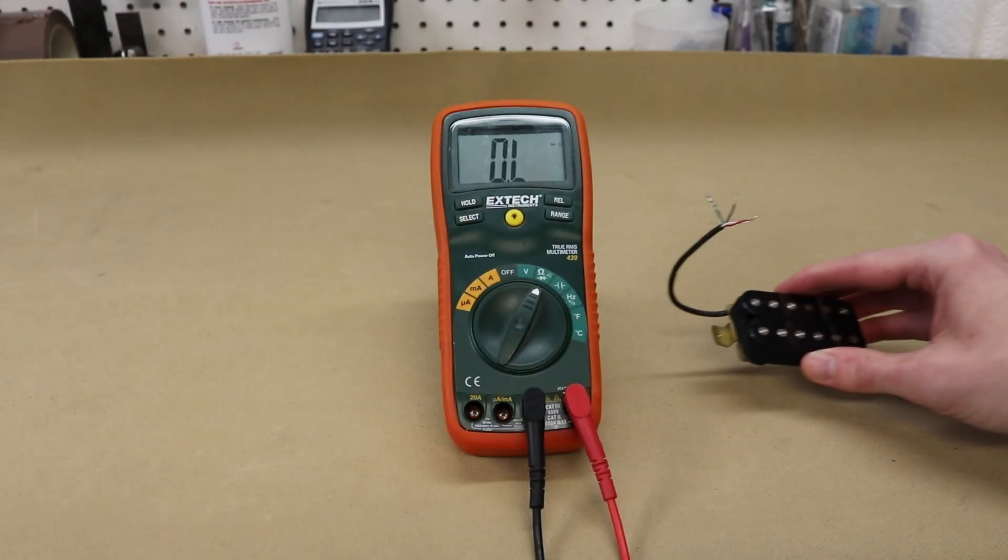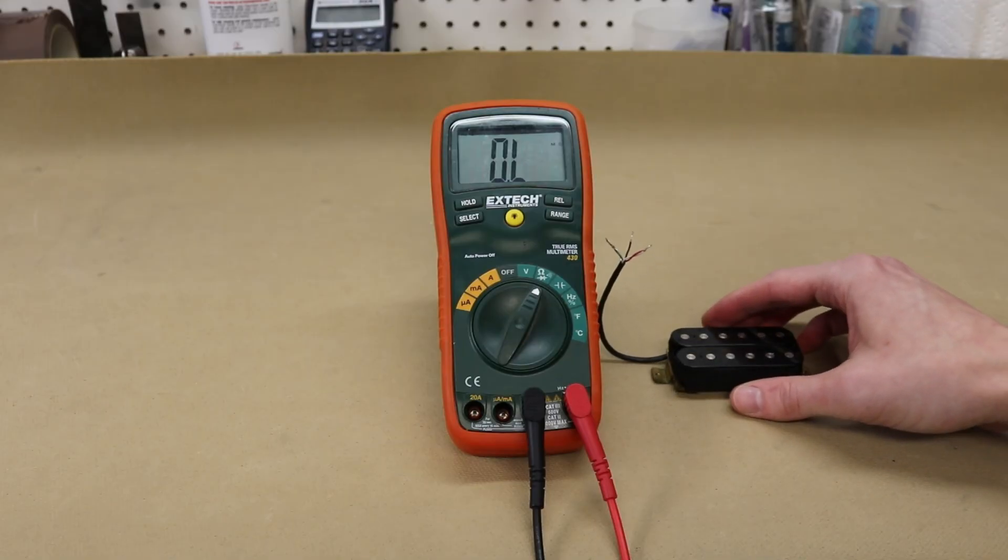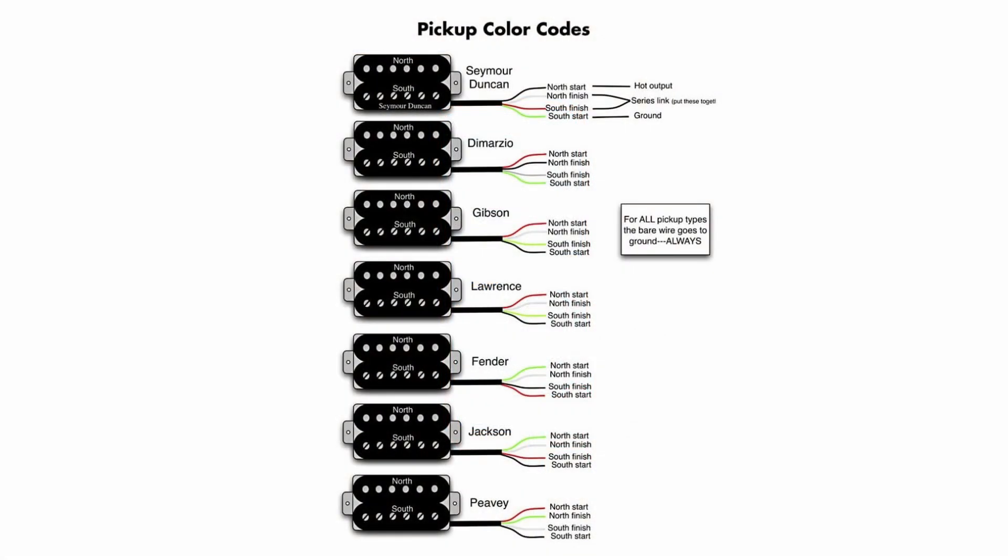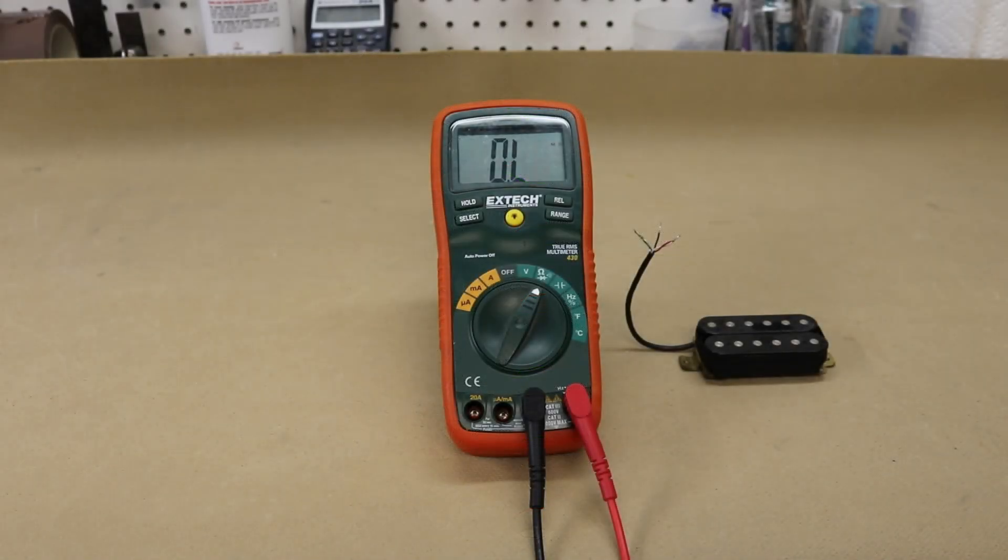For a humbucker with four conductor wires it can be slightly more complicated. Each pickup manufacturer has their own color code that shows which wires serve which function. If you want to measure the total DC resistance of a humbucker with four conductor wires you'll need to look up this code for whichever pickup you're measuring. In this case I'm going to be measuring a Seymour Duncan style humbucker.